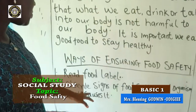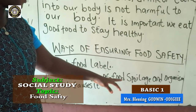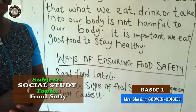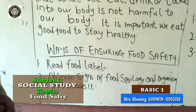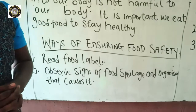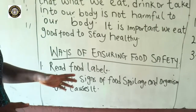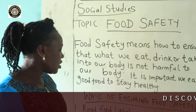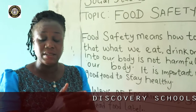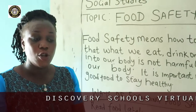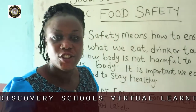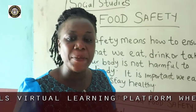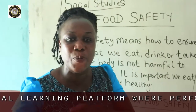Number two: you must observe the signs of food spoilage and the organisms that cause it. You must check the expiring date, because checking the expiring date helps you to know when that food can spoil and the duration that that food can stay.